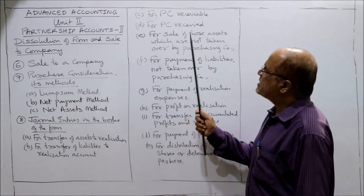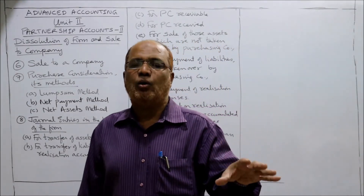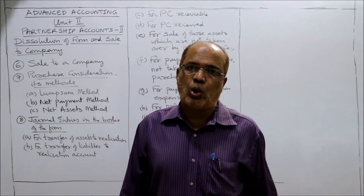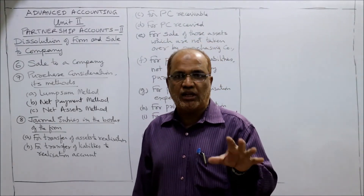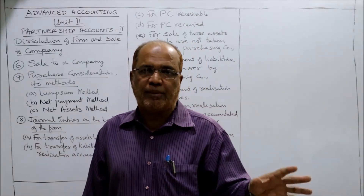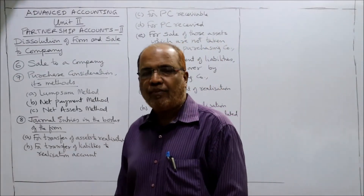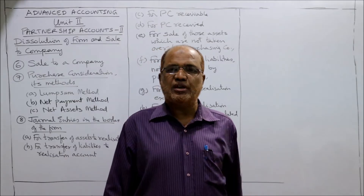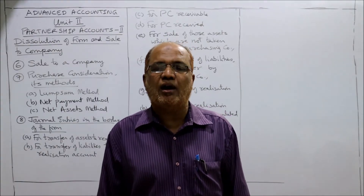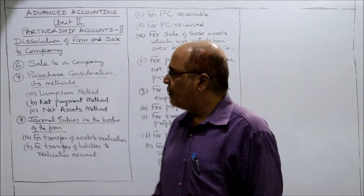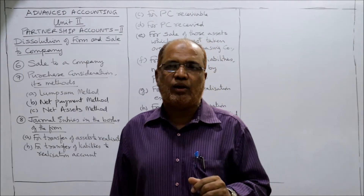The fifth entry is for sale of those assets not taken over by the purchasing company — these assets are sold in the market: Bank Account debit to Realization Account. The sixth entry is for payment of those liabilities not taken over by the purchasing company: Realization Account debit to Bank. The seventh entry is for payment of realization expenses: Realization Expenses Account debit to Bank.